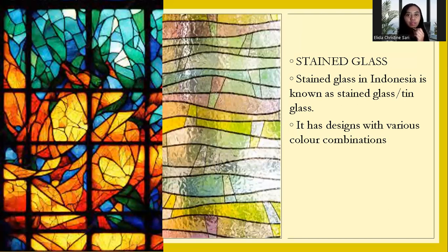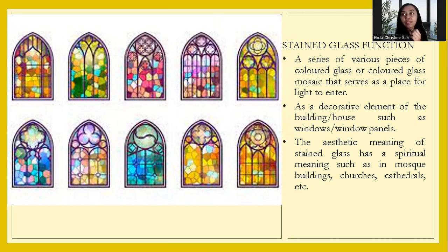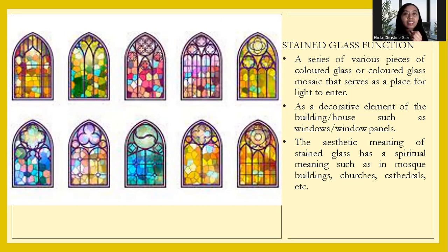Next, how about the stained glass function? A series of various pieces of colored glass mosaic serves as a place for light to enter — this is the very first function. And then, as a decorative element of a building or house, such as window or window panels. The next function is about aesthetic.